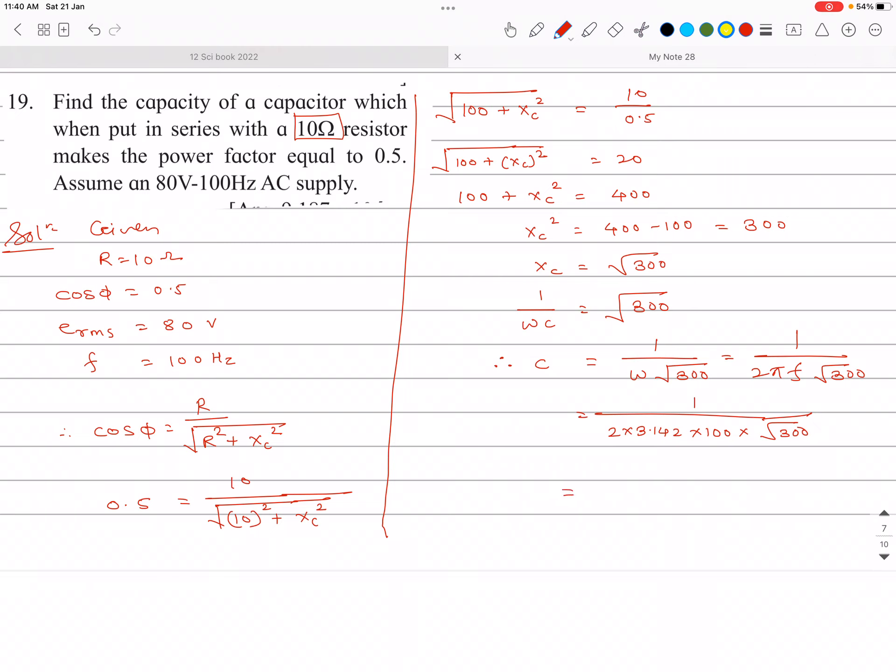And after simplification we are getting value 91.9 into 10 raise to minus 6, and this is capacity in farad. Or we can write this as 91.9 micro farad. So this is the answer.